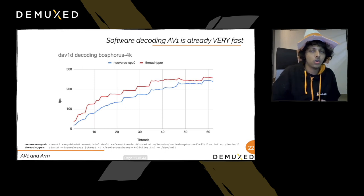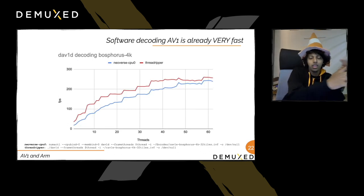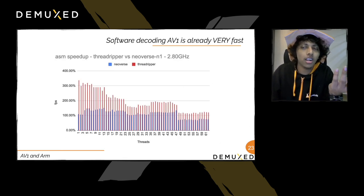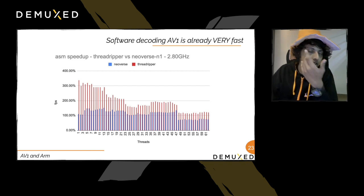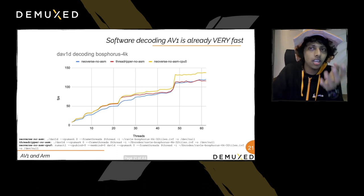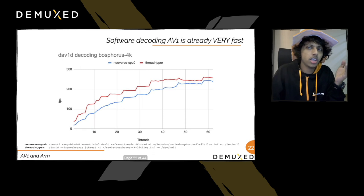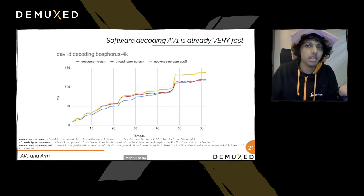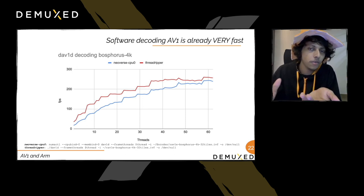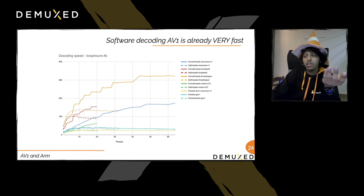When comparing pure C code — no assembly — ARM and Threadripper performance is similar. Enabling handwritten assembly gives more than 100% speedup in most cases, sometimes 60-70%, and in some cases over 300% faster. At 30 threads, Threadripper reaches around 120-200+ FPS, while Neoverse achieves around 160+ FPS — a very competitive result.